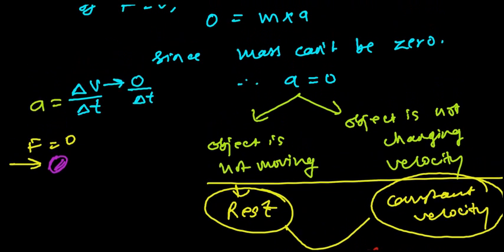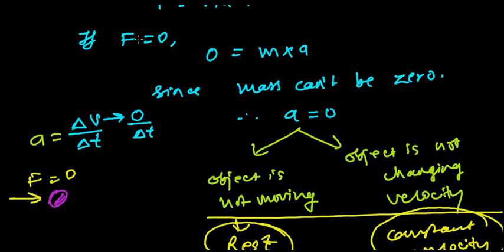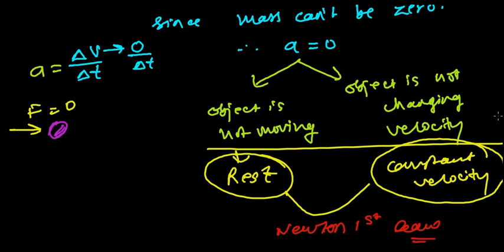Let me sum up once again. If the external force applied on an object is zero, then if the object is at rest it will remain at rest, and if the object is moving with a certain speed it will continue moving at that speed. That's the statement of Newton's first law. I hope you understand how to prove Newton's first law from Newton's second law. See you in the next video. Goodbye, and don't forget to subscribe to the channel.